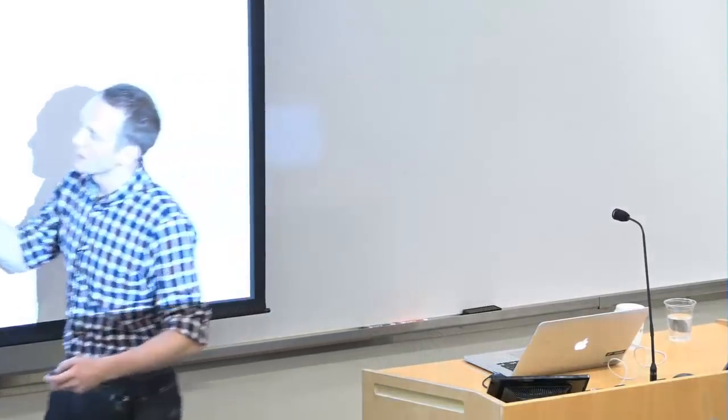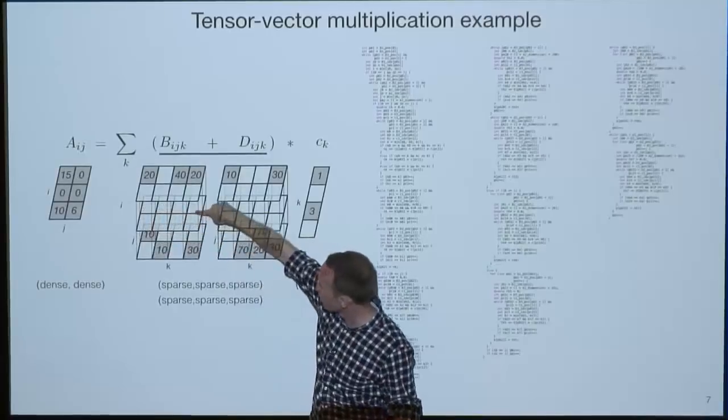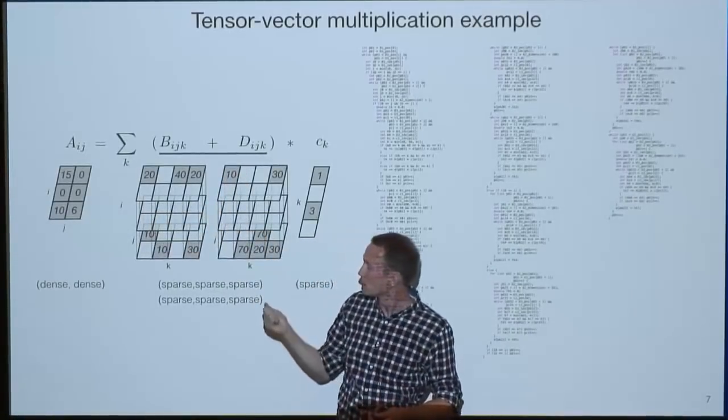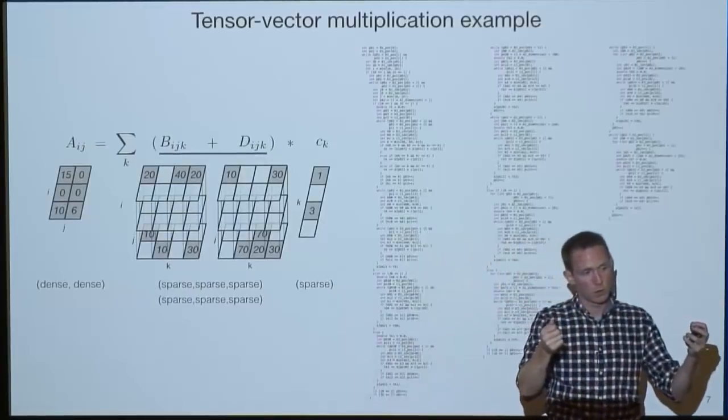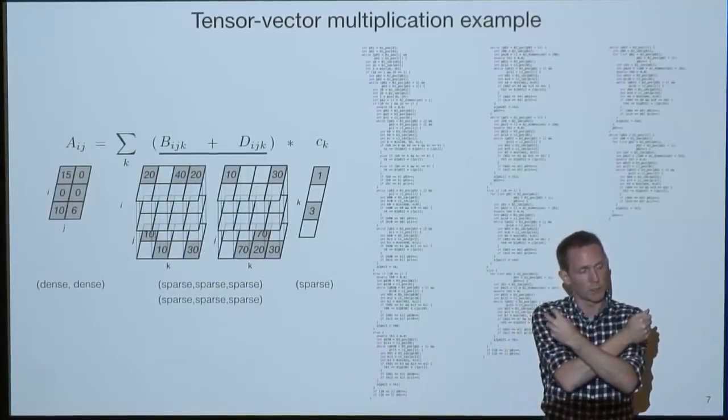A question about dimension ordering: you have to specify both whether each dimension is dense or sparse, and the order in which to store them. If the first dimension is sparse, a whole slice disappears; if the second is sparse, a row disappears. For a matrix you can store in column order (CSC) or row order (CSR). I left that out for simplicity.